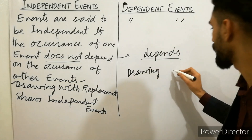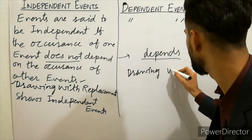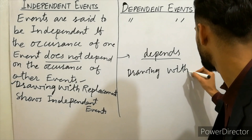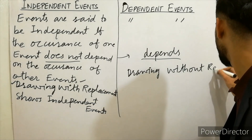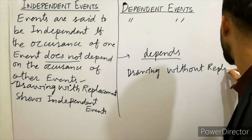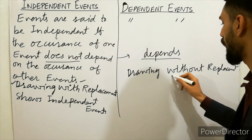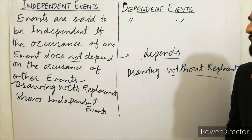Drawing is done without replacement. So without replacement, drawing is for dependent events.